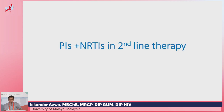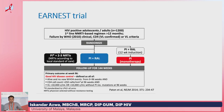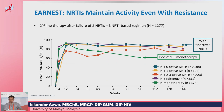Switching themes to the use of PIs and NRTIs in second-line therapy — one of the most important studies addressing this was the EARNEST study, which looked at failure of patients on first-line NNRTI-based regimens who were randomized to two or three NRTIs and a PI versus a nucleoside-sparing arm of PI and raltegravir, and a third arm of PI monotherapy. They were followed up for 144 weeks.